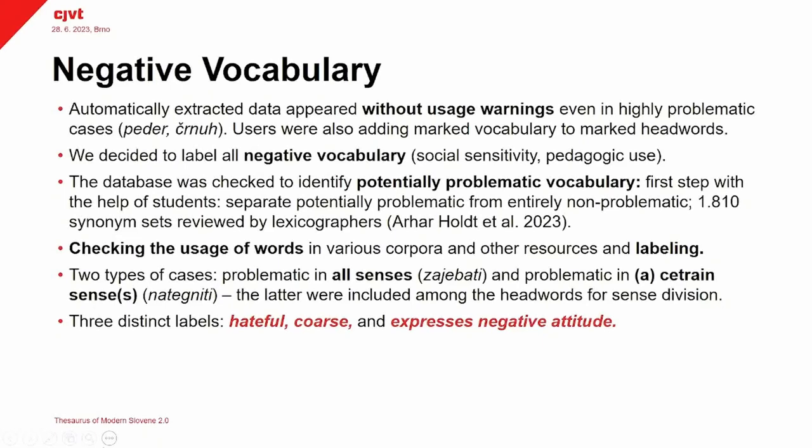The second problem was that users were also prompted to provide marked vocabulary to marked headwords, and they didn't have in version 1.0 a nice, systematic way through the interface to apply the label. So how did we mark the negative vocabulary?